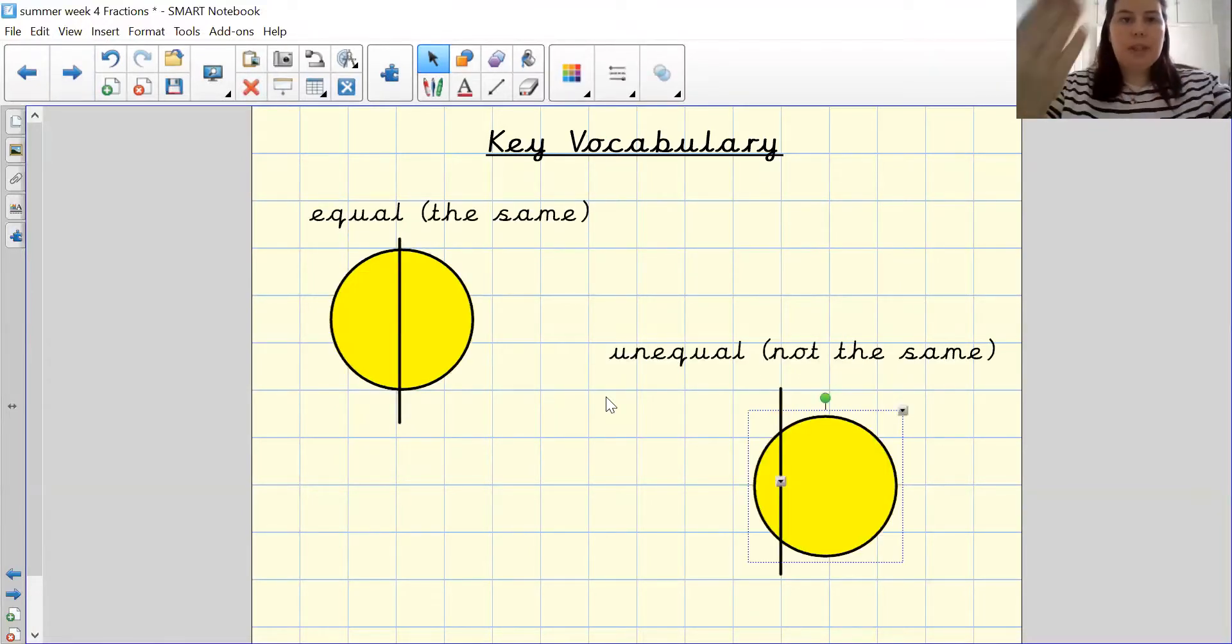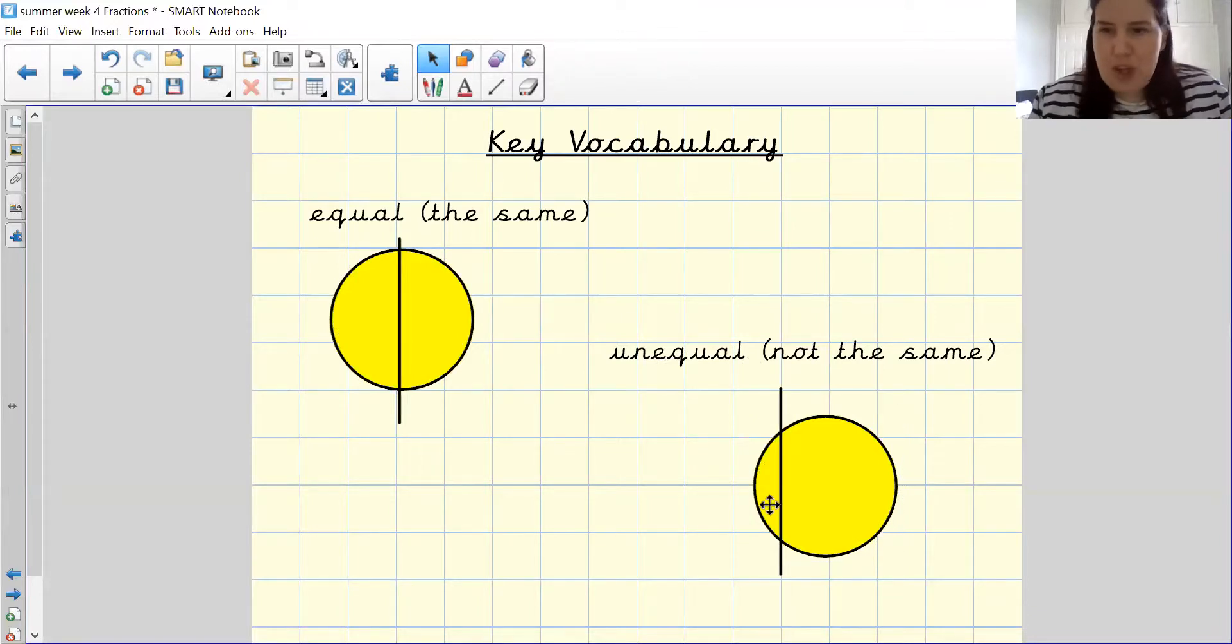Equal means that they are the same. Fantastic. And then unequal means that it's not the same. So this little bit is not the same as this large amount on the other side.